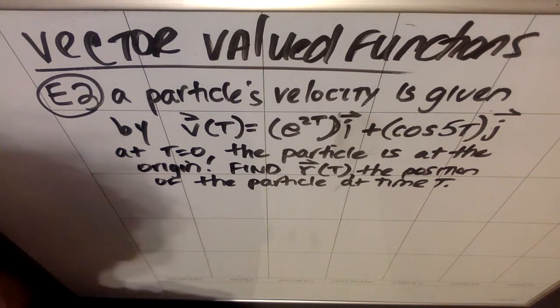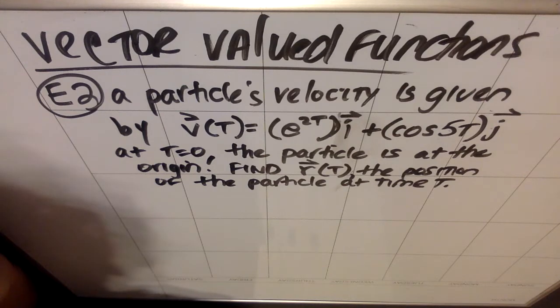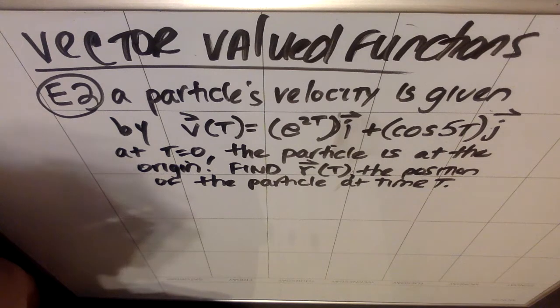All right, so we're going to do example two for vector-valued functions. A particle's velocity is given by the vector v(t) equals e to the 2t times the i vector plus cosine 5t times the j vector.